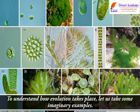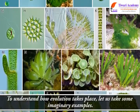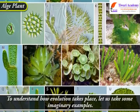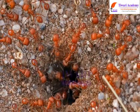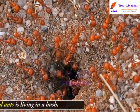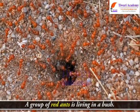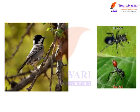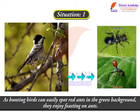To understand how evolution takes place, let us take some imaginary examples. A group of red ants is living in a bush. As hunting birds can easily spot red ants in the green background, they enjoy feasting on ants.